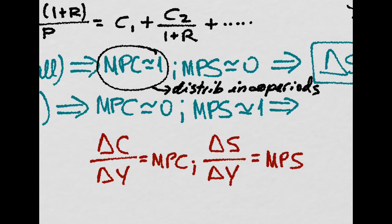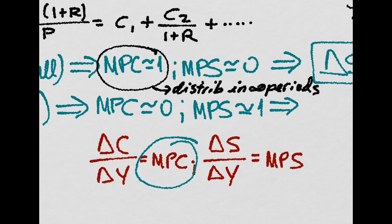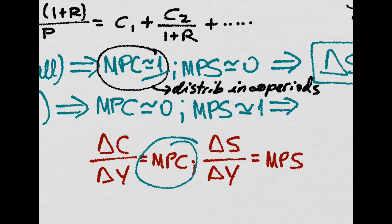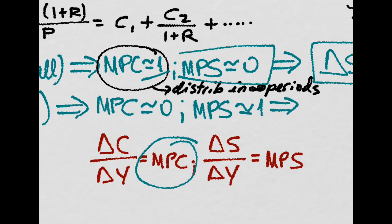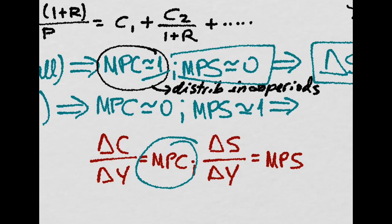If the shock is permanent, that is, you consume it all, then your marginal propensity to consume will be one. You will consume it all. But your marginal propensity to save is actually close to zero. So you don't save.